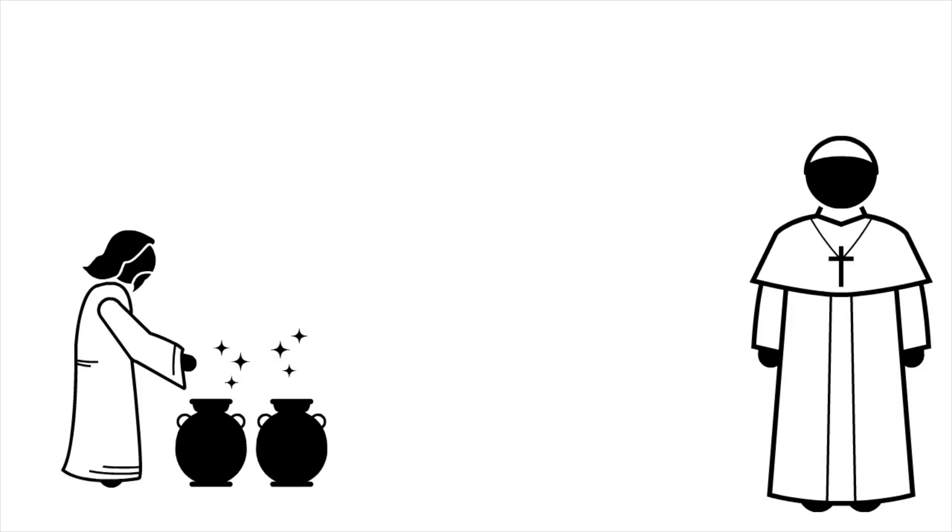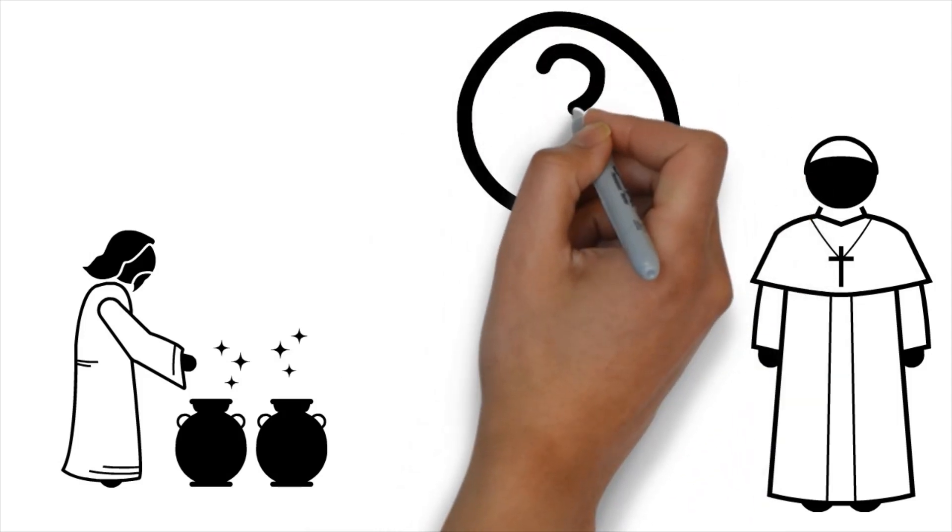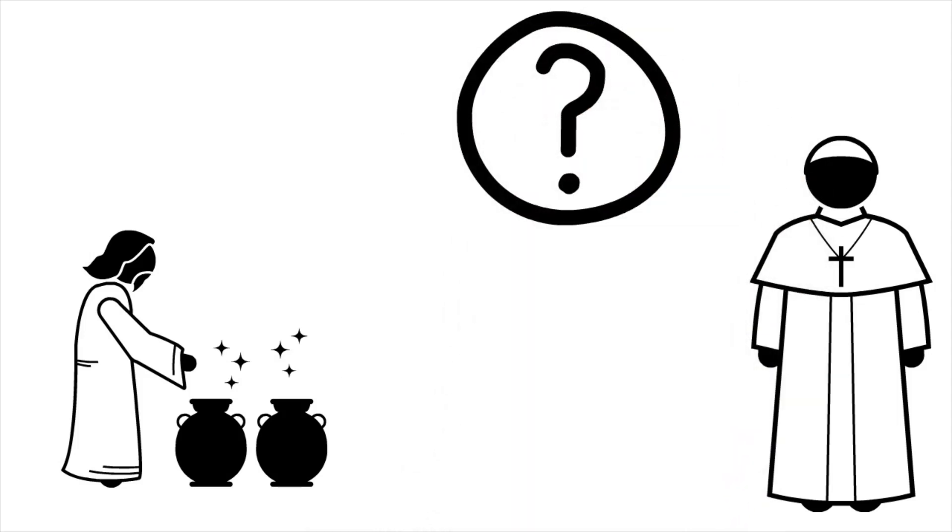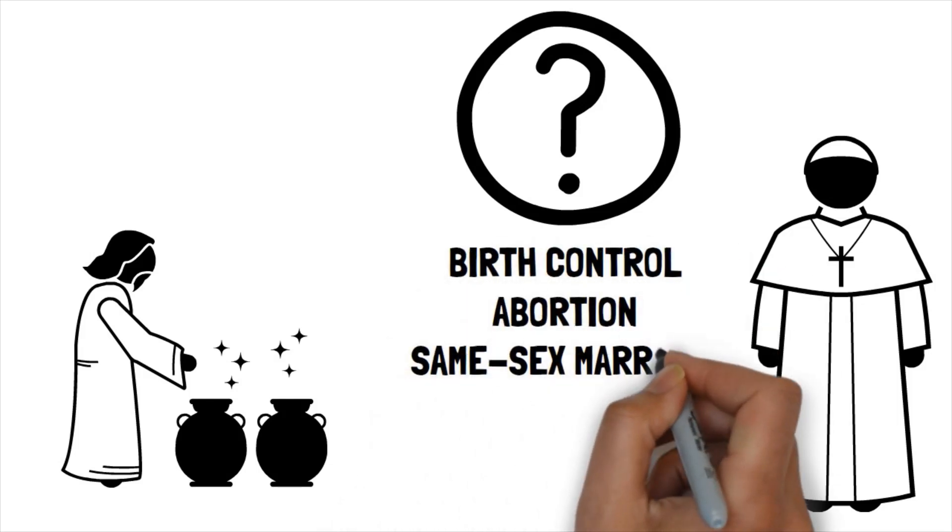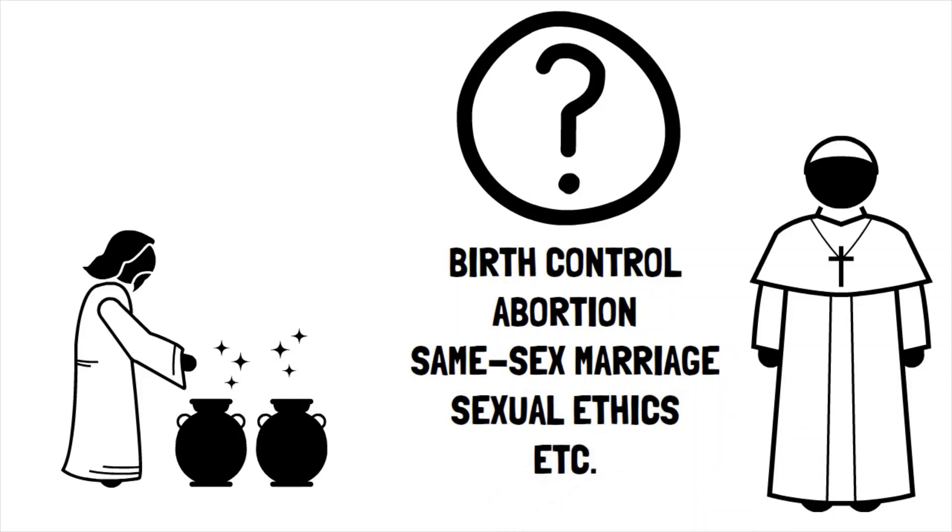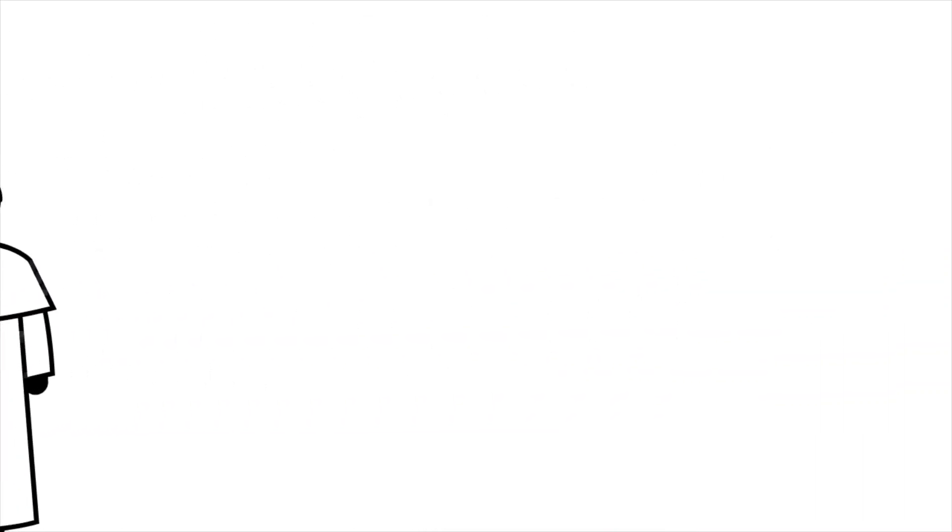And isn't this water into wine thing every Sunday a bit trivial? Why does this seemingly insignificant miracle, although repeated, give the Catholic Church the right to say that one can't use birth control, or have an abortion, marry somebody of their own gender, or restrict their sexual life to just heterosexual marriage?